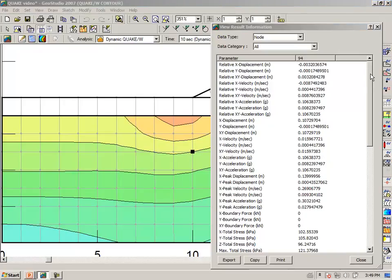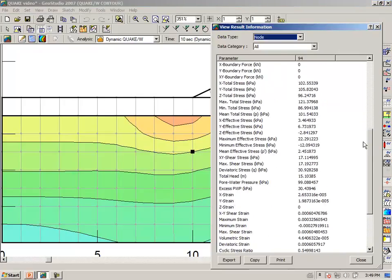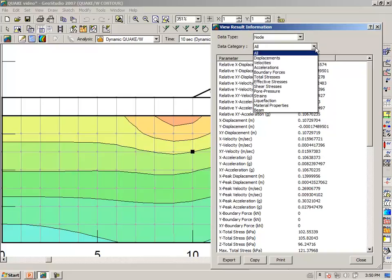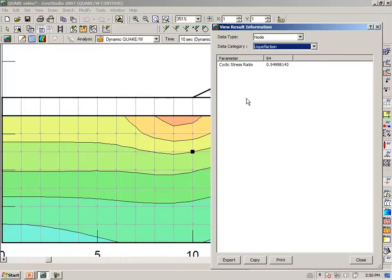We can break this information down into various categories. In this case, I will look at the liquefaction category. And it says that Quake W has computed here a cyclic stress ratio of 0.55.